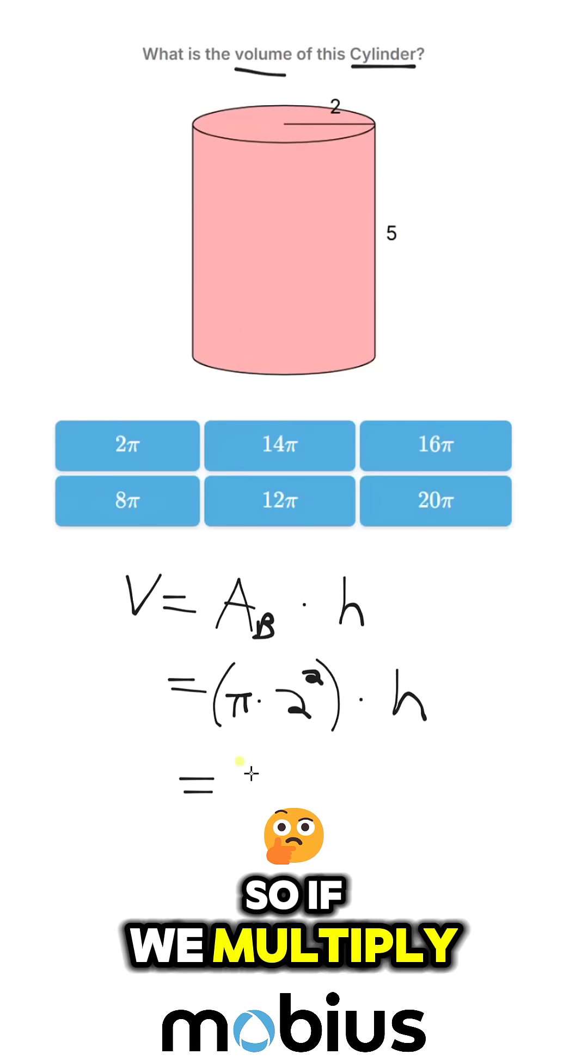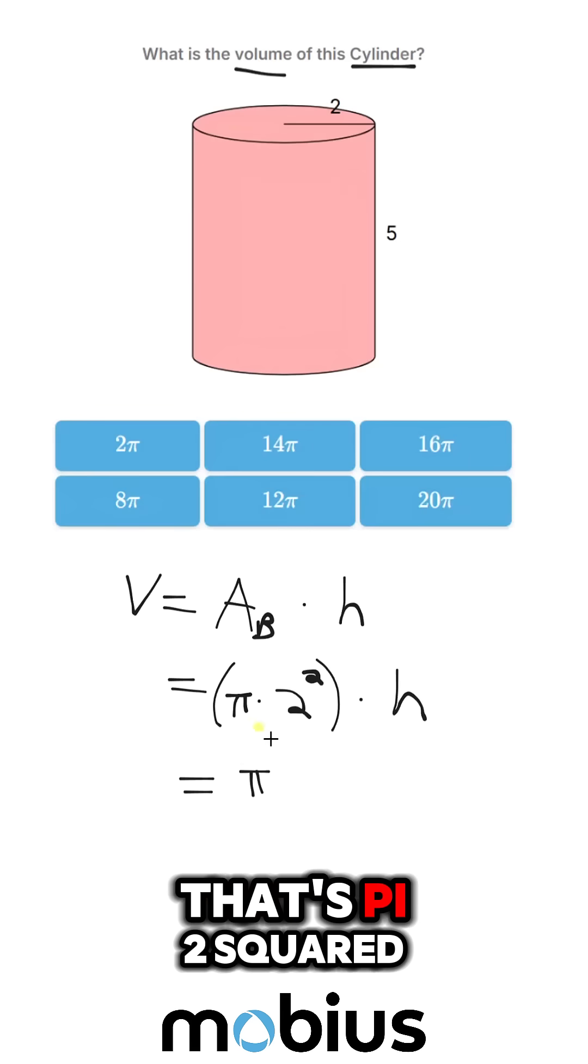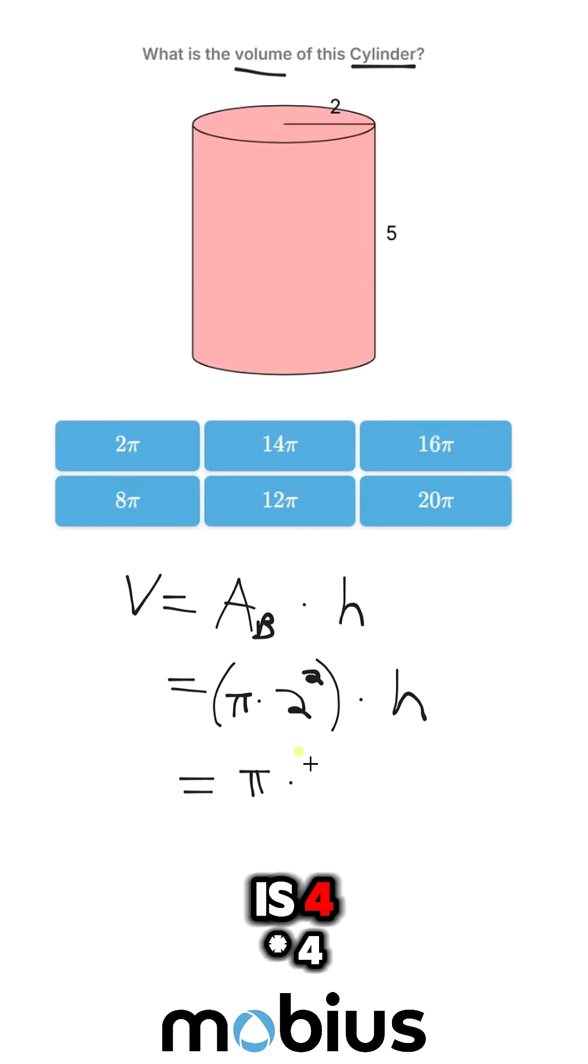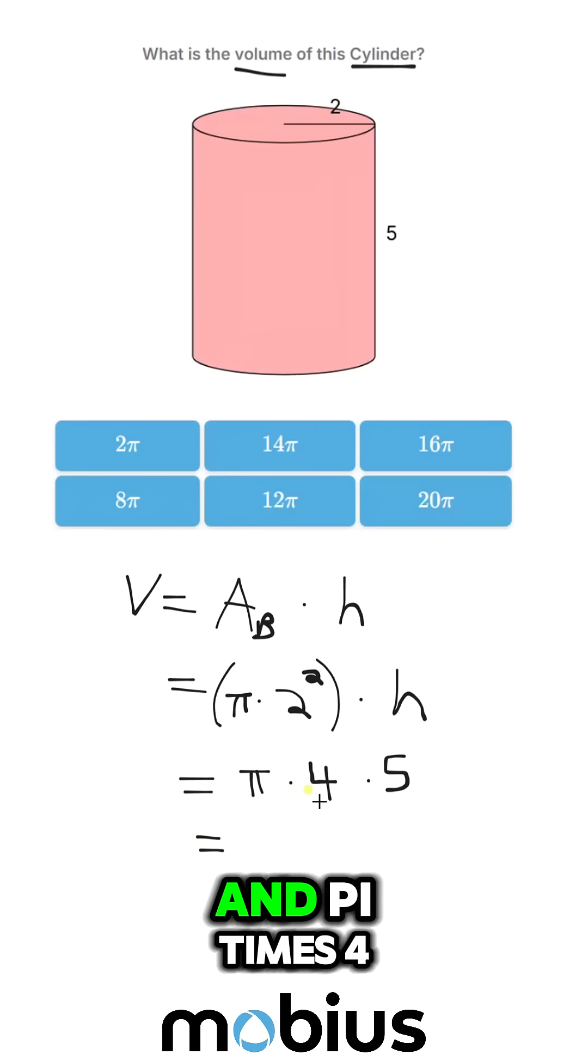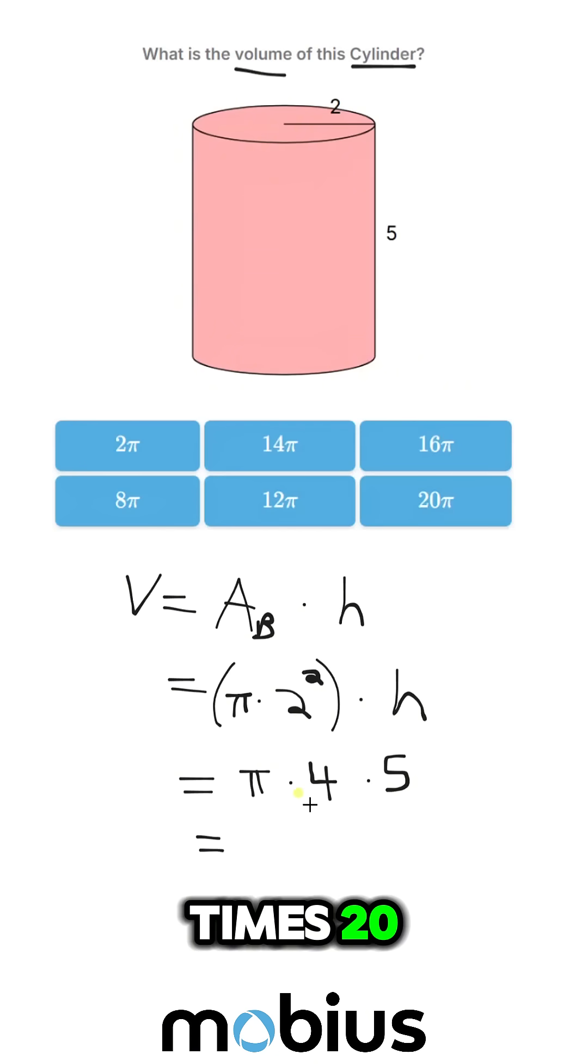So if we multiply that out, that's pi, 2 squared is 4, times 4. Our height is 5, times 5. And pi times 4 times 5 is pi times 20.